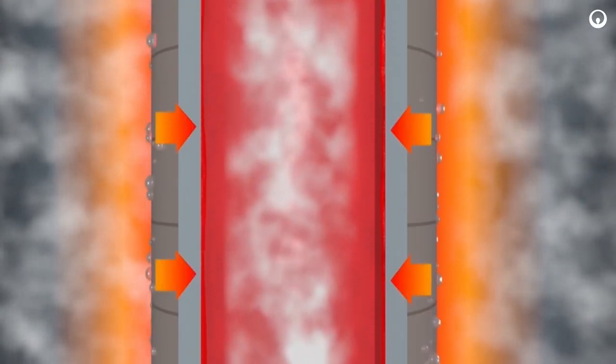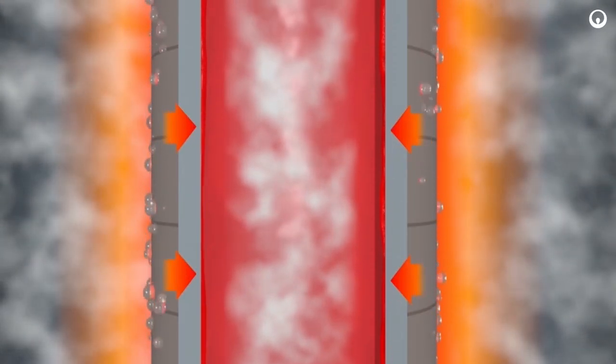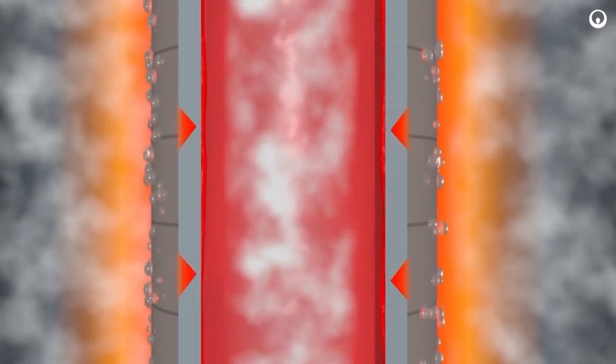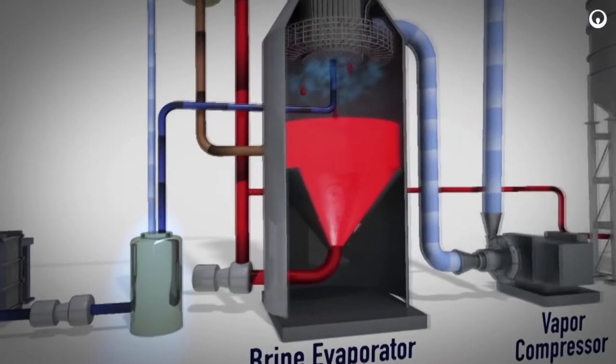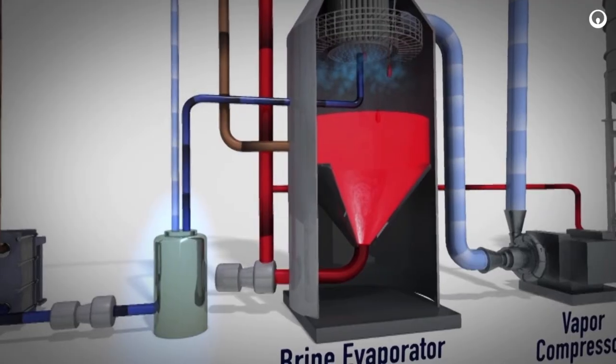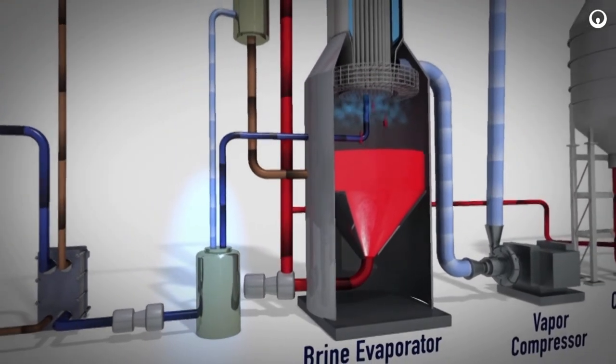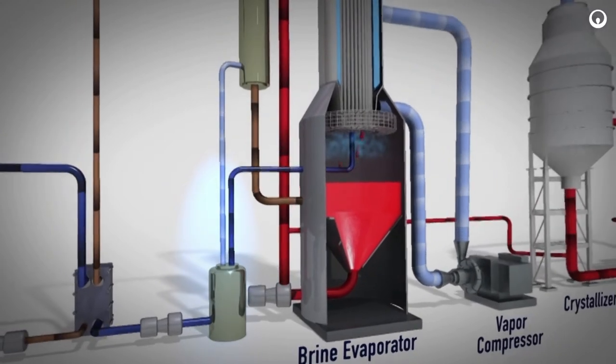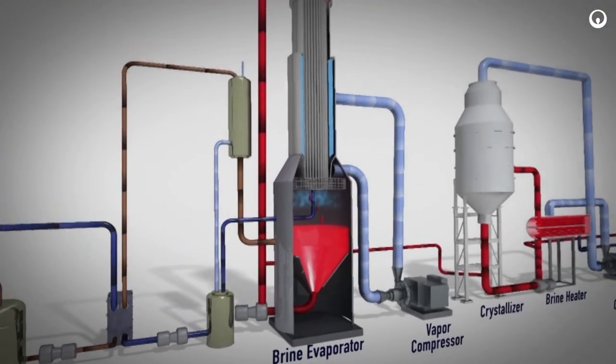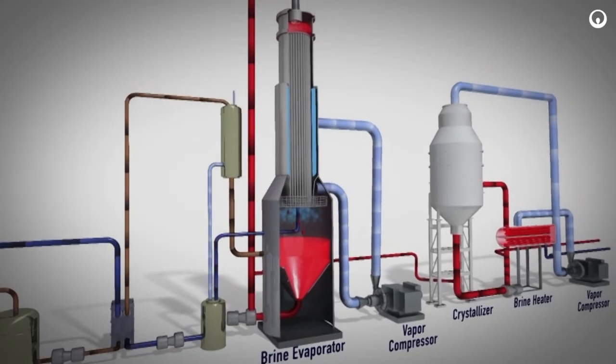The vapor condenses on the outside of the vertical tubes. The condensed vapor flows down the outside of the heat transfer tubes and is recovered as a distillate. The distillate flows to the distillate tank and then is pumped through the heat exchanger. Hot distillate is cooled to heat incoming feed water. The cooled distillate is available for reuse or recycle.